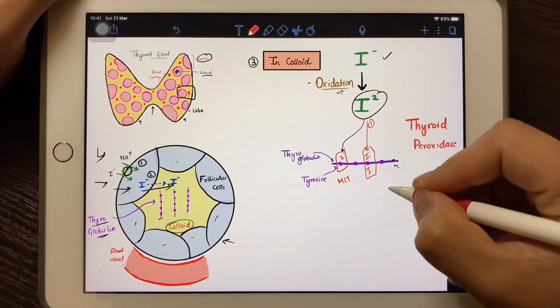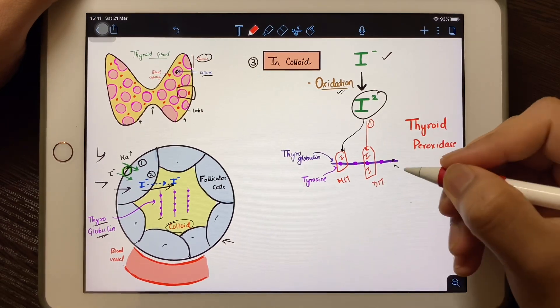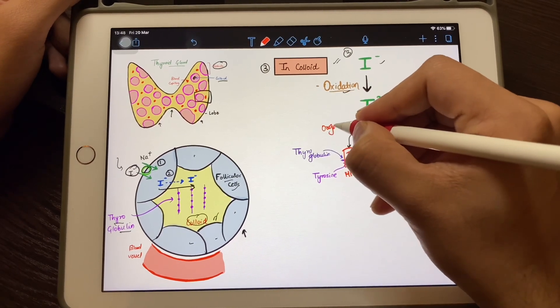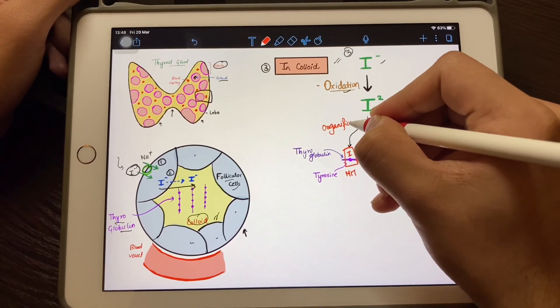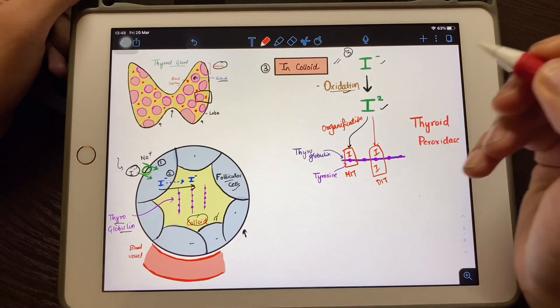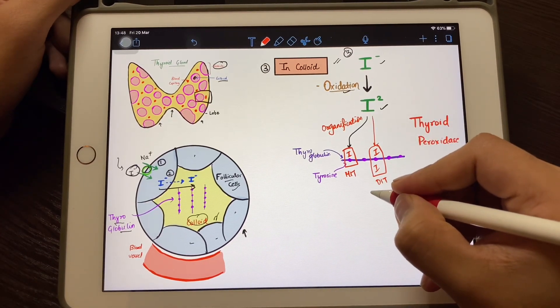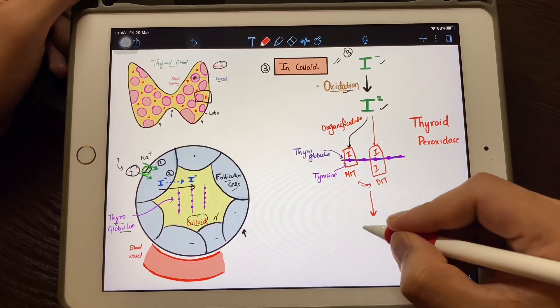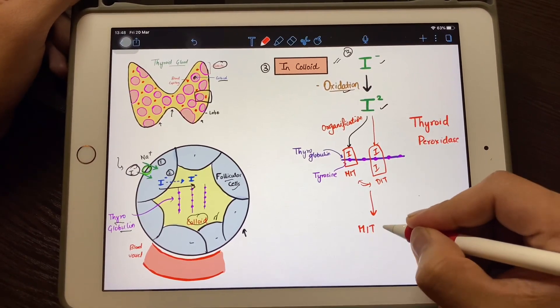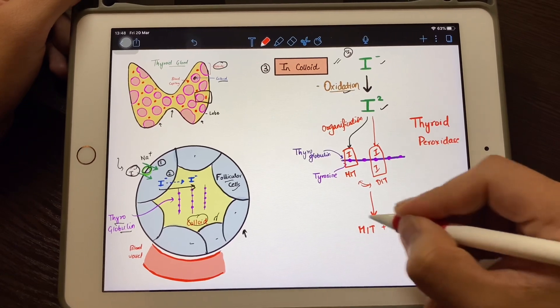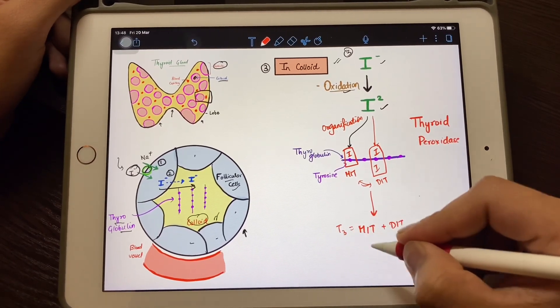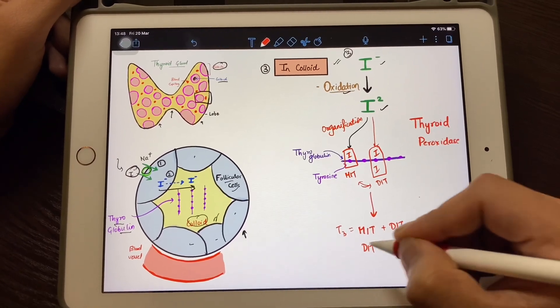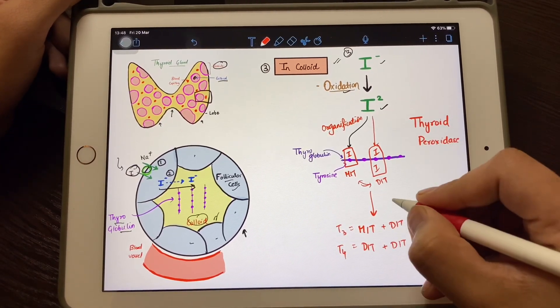Then the next reaction takes place, and in this reaction, there's coupling between these two. If MIT joins with DIT, then it's known as T3, and if DIT joins with DIT, then it's known as T4. This reaction is known as coupling, and this T3 and T4 store in the colloid.